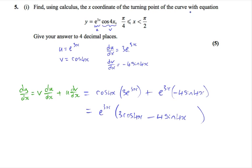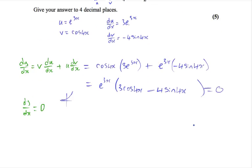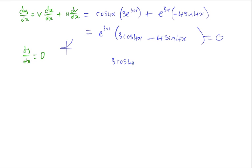To find the turning points, we need to remember that once you've found dy dx, we set it equal to 0 and solve, which gives us the turning points. So setting this to 0, we know that e to the 3x cannot be equal to 0. A quick sketch of the curve shows that it never actually touches the x-axis, so it's never equal to 0. Therefore, what's in the bracket must be equal to 0. So we have 3 cos 4x minus 4 sine 4x equal to 0.